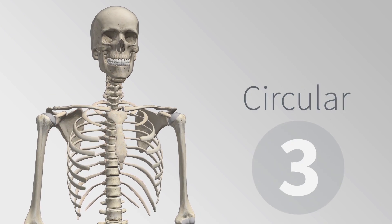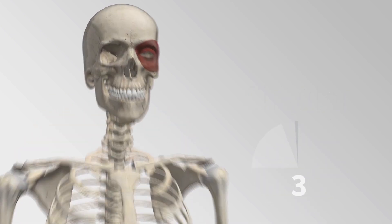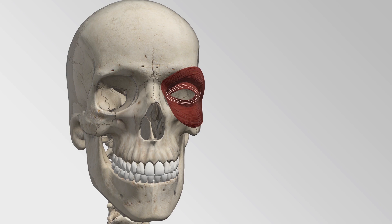Circular skeletal muscles are made up of fibers that are arranged in a circular manner. They are found at points of openings where the contraction leads to a closure of that opening.